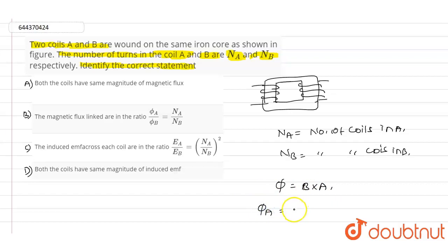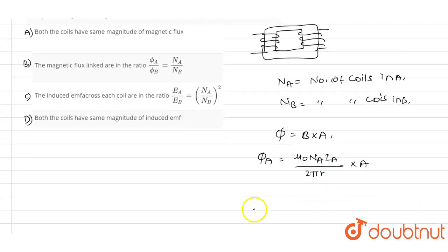Φ_A value is equal to μ₀ times N_A times I_A divided by 2πr into capital A, where I_A is the current in coil A, and small r is the radius.